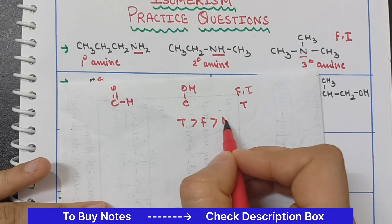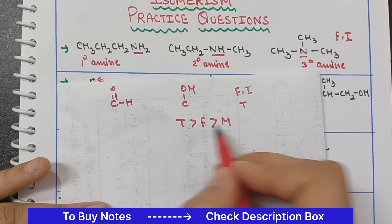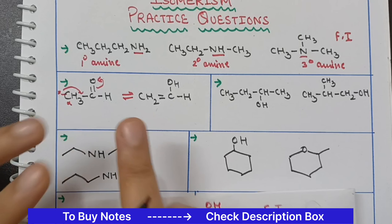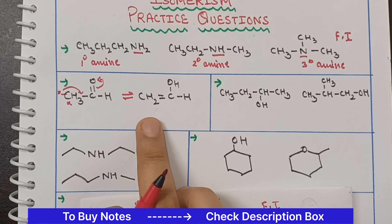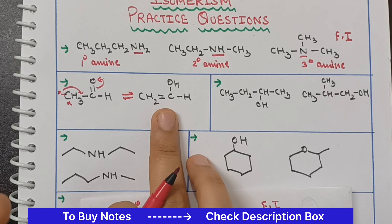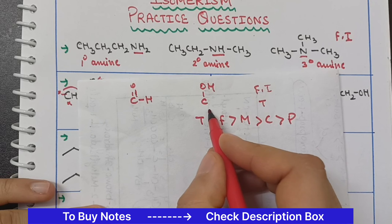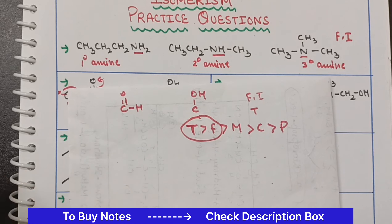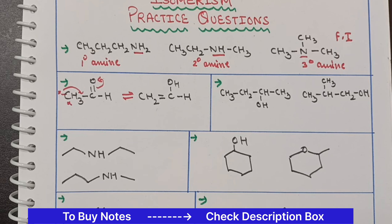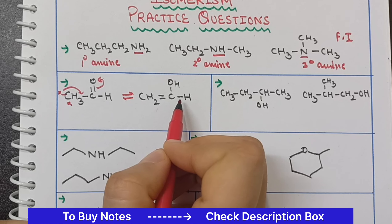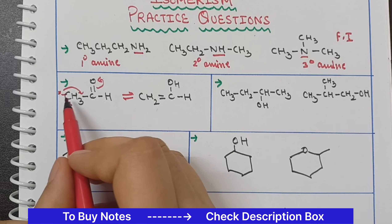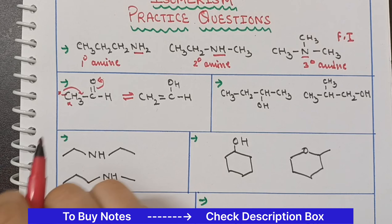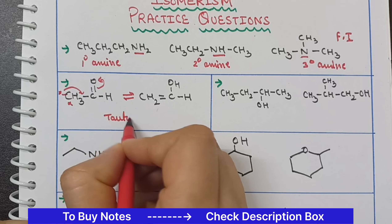But wait — tautomerism is when hydrogen migrates from one atom to another within the same molecule. These two are called tautomers. So we need to distinguish between functional isomers and tautomers using the priority order.